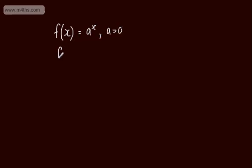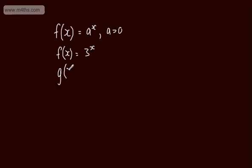An example might be f of x equals 3 to the power of x. So we have a positive constant, which is 3, and we raise this to the power of x. We call 3 the base, and we call x the exponent. Another function g of x might be 7 to the power of x.